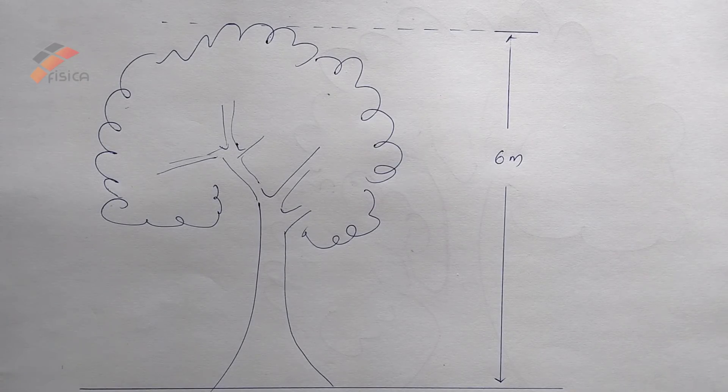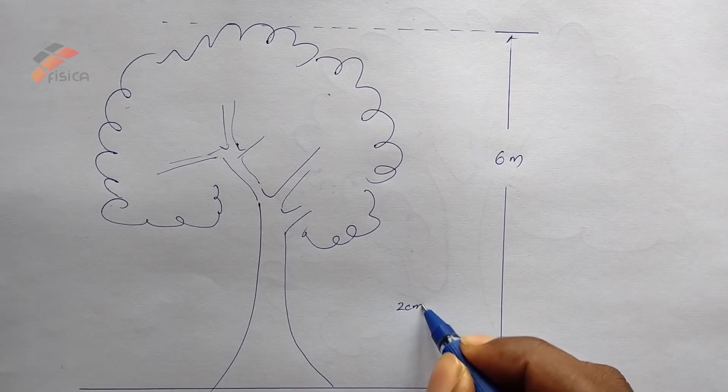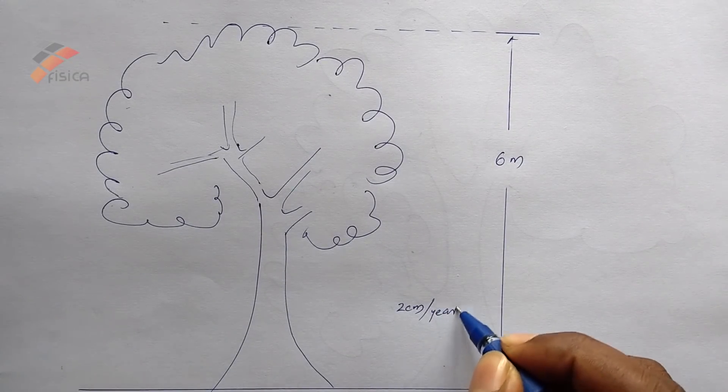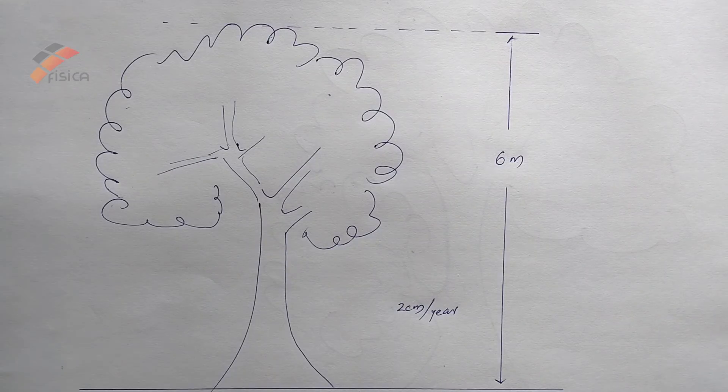Suppose this is a large tree of almost height six meters or higher than six meters. Now the condition is the tree grows two centimeter per year and we are asked to find out the height of nail after five years.